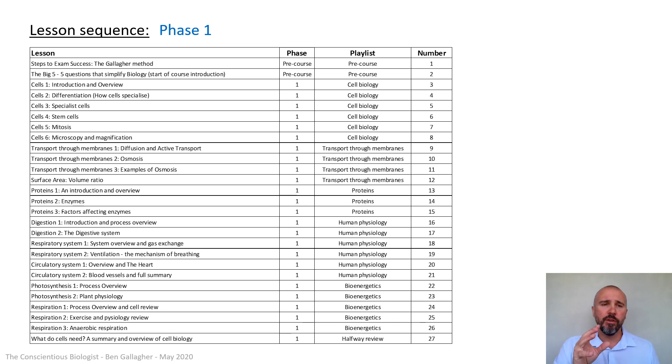But then we start phase one. Firstly, you've got the six cell biology lessons. I've put the lessons together in groups that fit nicely and fit logically together. If you look at the playlists on my YouTube channel, they're already in there. So you could just go to the cell biology playlist, click play, and it'll go through all six at once. You've got the six cell biology ones, then the transport through membranes ones, there's four of those. Then you've got three proteins ones. Protein is really important. Then you've got a big chunk of human physiology: digestive system, respiratory system, circulatory system. Then we've got bioenergetics, that's photosynthesis and respiration.